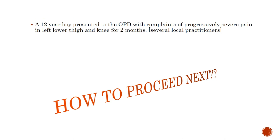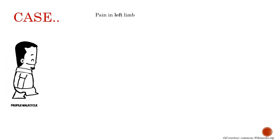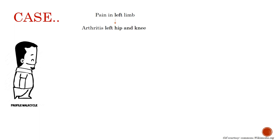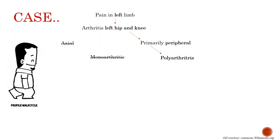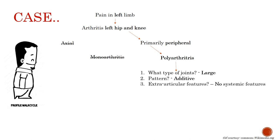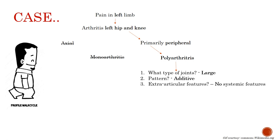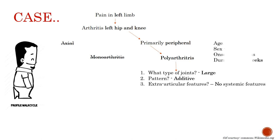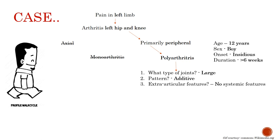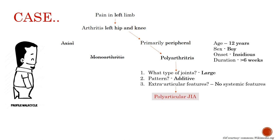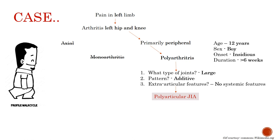Coming back to the case: the child presented with pain in the left limb. On examination, he had arthritis of the left hip and knee — primarily peripheral, polyarthritis, with large joint involvement. The pattern was additive. There were no extra-articular or systemic features. He was a 12-year-old boy; onset was insidious and duration was more than 6 weeks. Our provisional clinical diagnosis was polyarticular JIA — demonstrating how clinical findings alone can guide us to a provisional diagnosis.